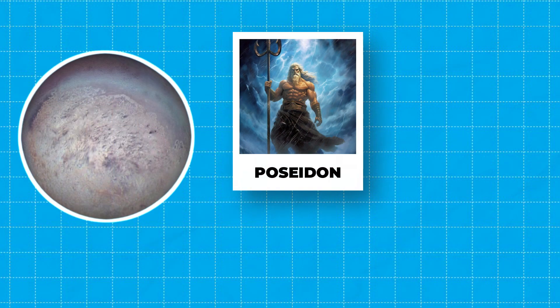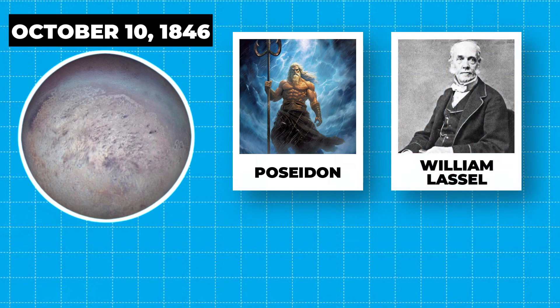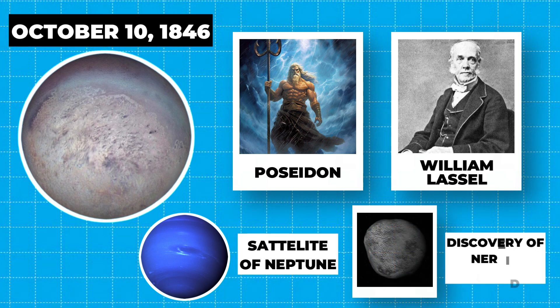Triton, named after the son of the Greek god Poseidon, equivalent to the Roman Neptune, was discovered on October 10, 1846, by British astronomer William Lassell, just 17 days after Neptune itself was discovered, and was initially known simply as the Satellite of Neptune until the discovery of Nereid in 1949.